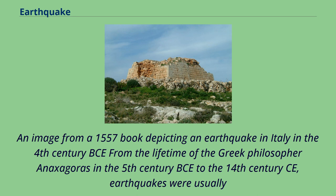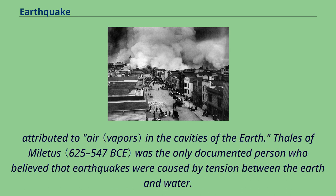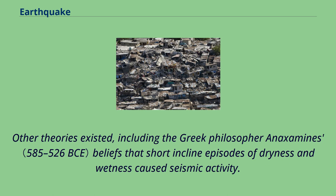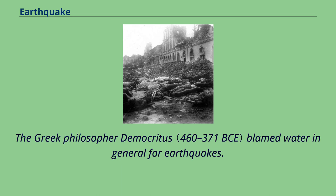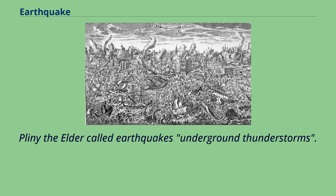From the lifetime of the Greek philosopher Anaxagoras in the 5th century BCE to the 14th century CE, earthquakes were usually attributed to air in the cavities of the earth. Thales of Miletus was the only documented person who believed that earthquakes were caused by tension between the earth and water. Other theories included Anaximenes' beliefs that episodes of dryness and wetness caused seismic activity. The Greek philosopher Democritus blamed water in general for earthquakes, while Pliny the Elder called earthquakes underground thunderstorms.